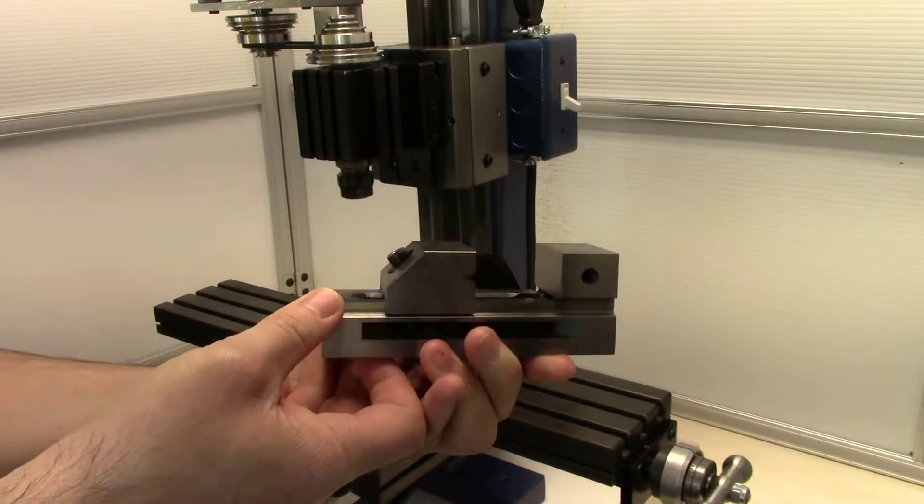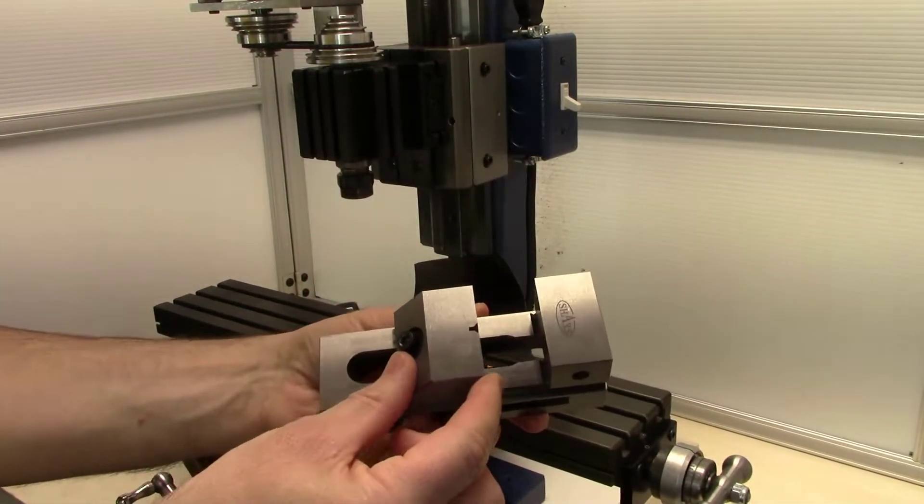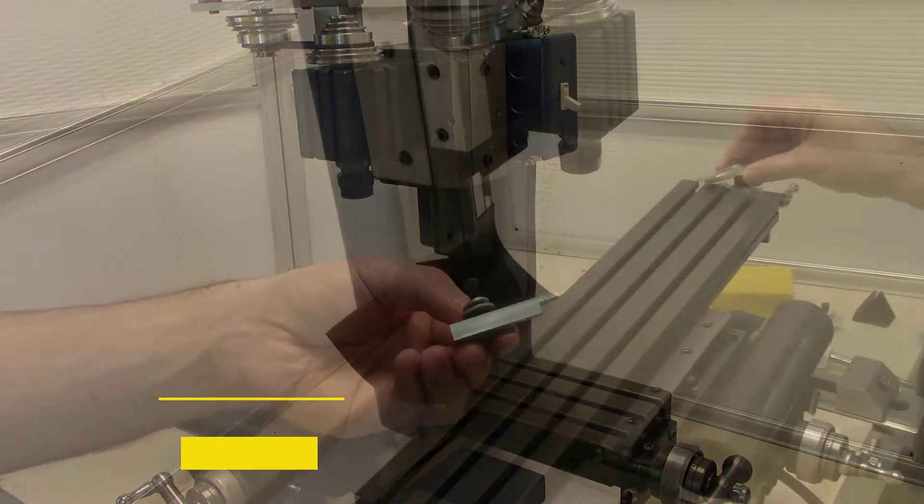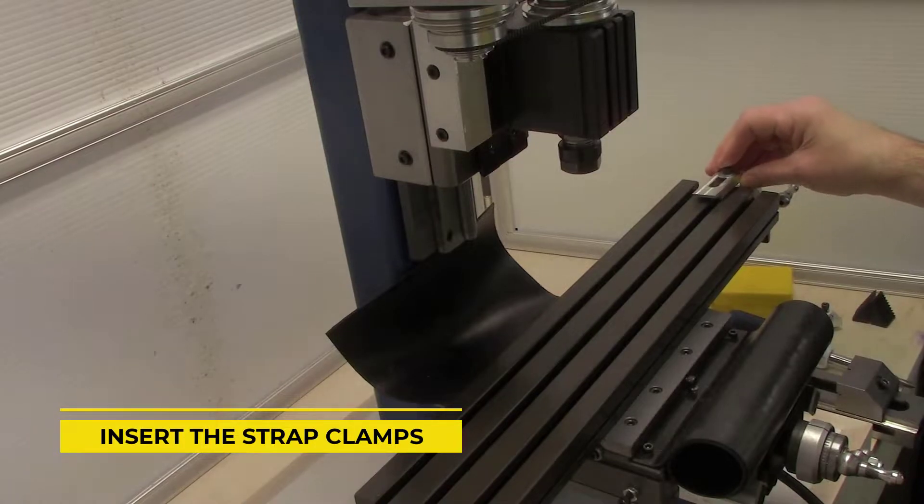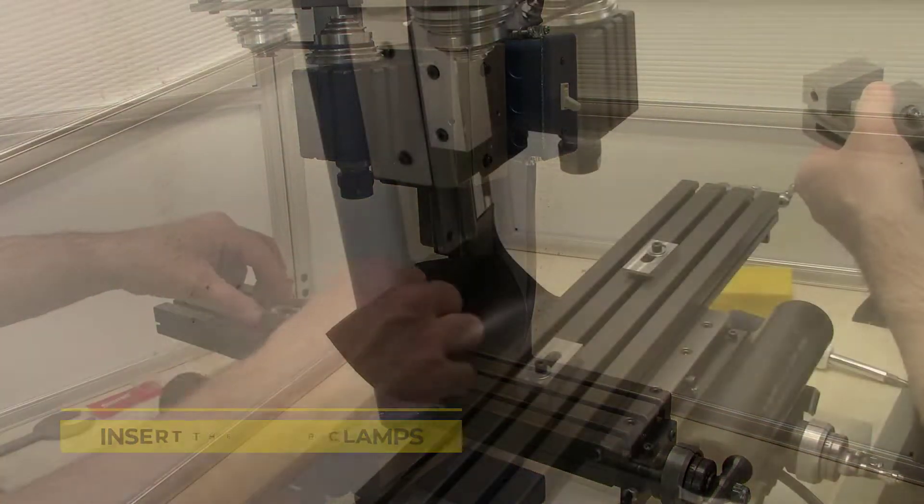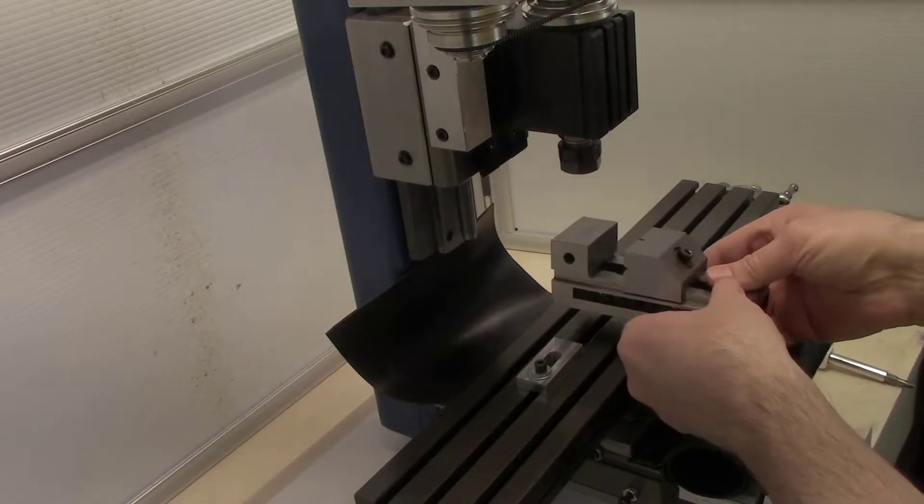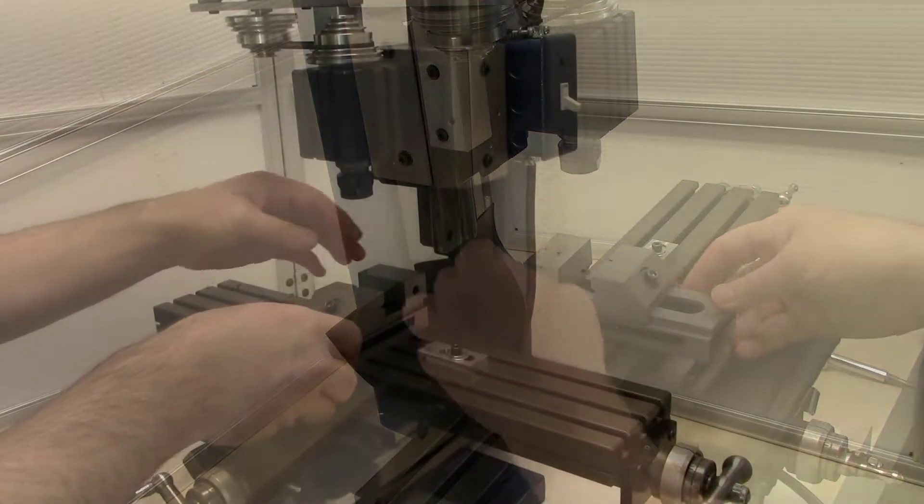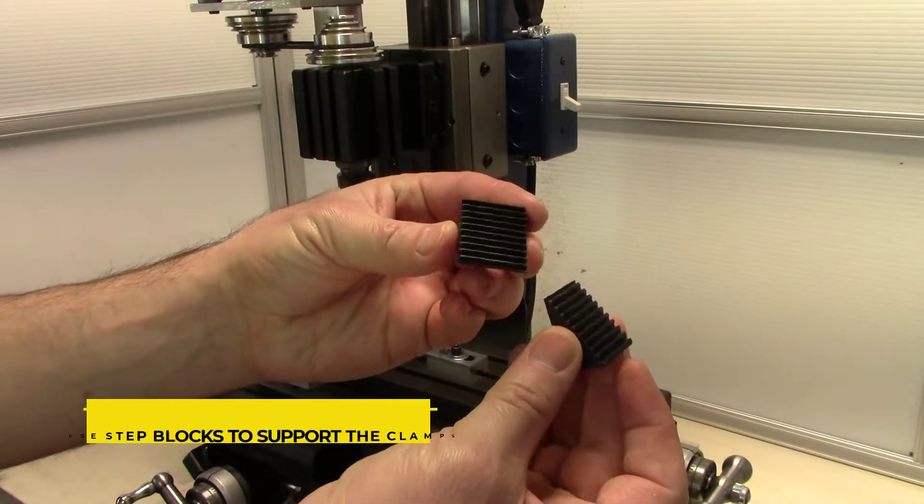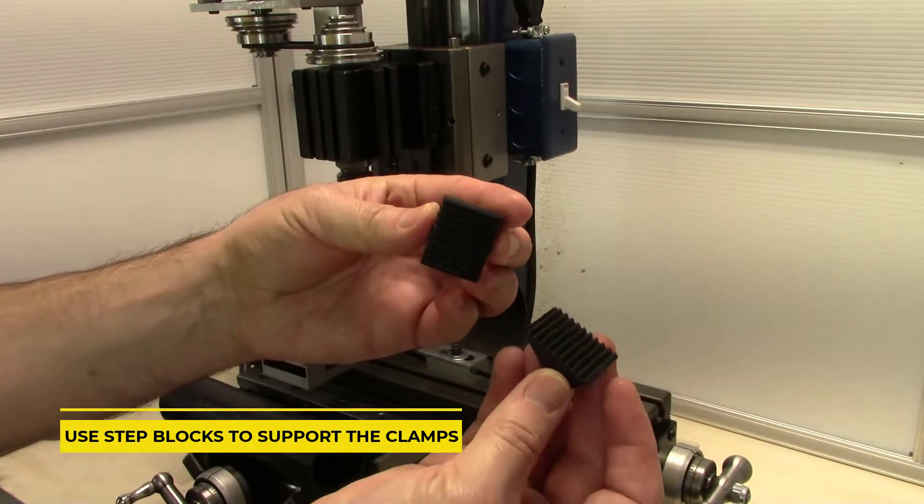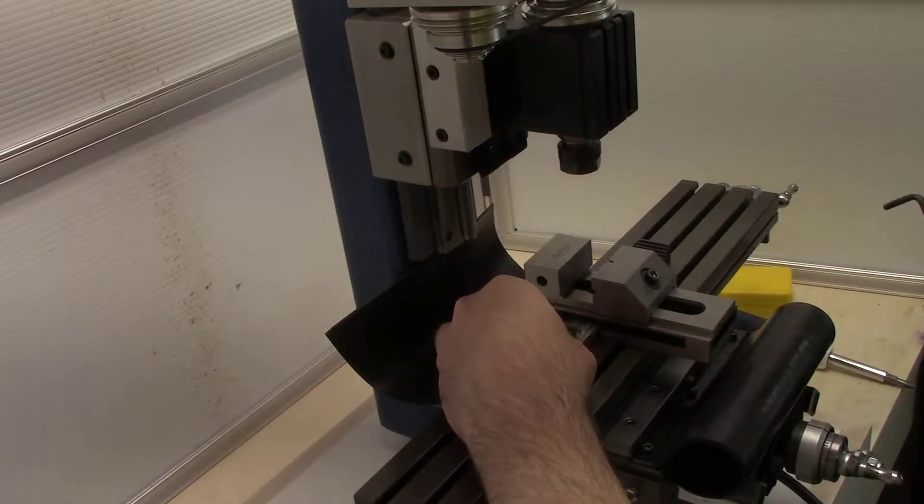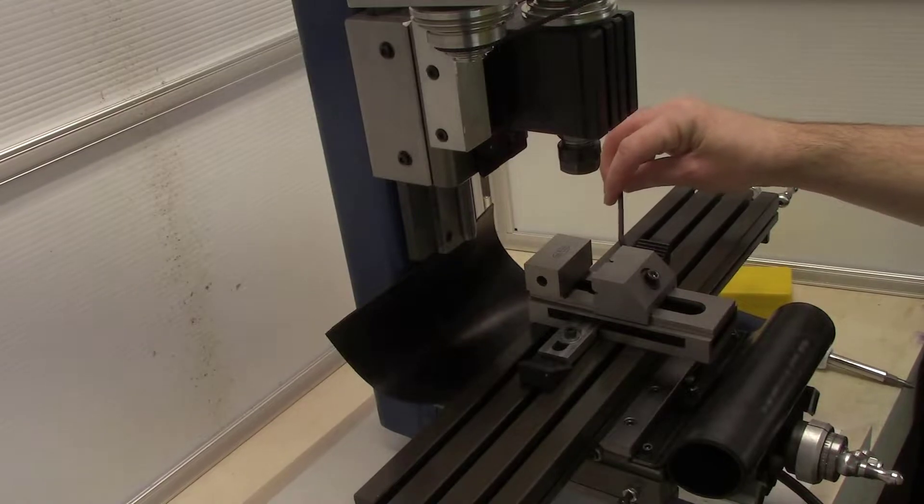In this video we're going to indicate this two inch vise. We'll go ahead and install our strap clamps. Here we'll use step locks to support the strap clamps. We'll go ahead and lightly tighten the clamps.